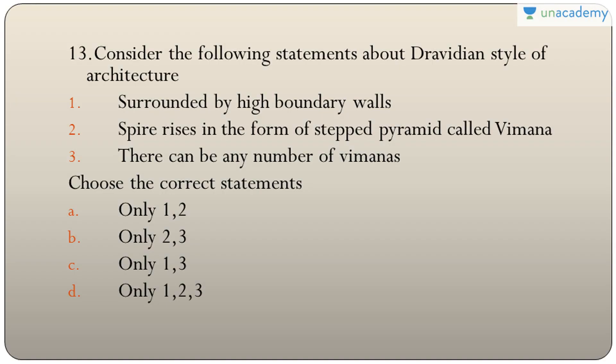Question thirteen: statements about Dravidian style of architecture — surrounded by high boundary walls, the spire rises in the form of a stepped pyramid called Vimana, and there can be any number of Vimanas. The first two are correct, but only one Vimana is present — not any number. So the answer is C — only one and two.